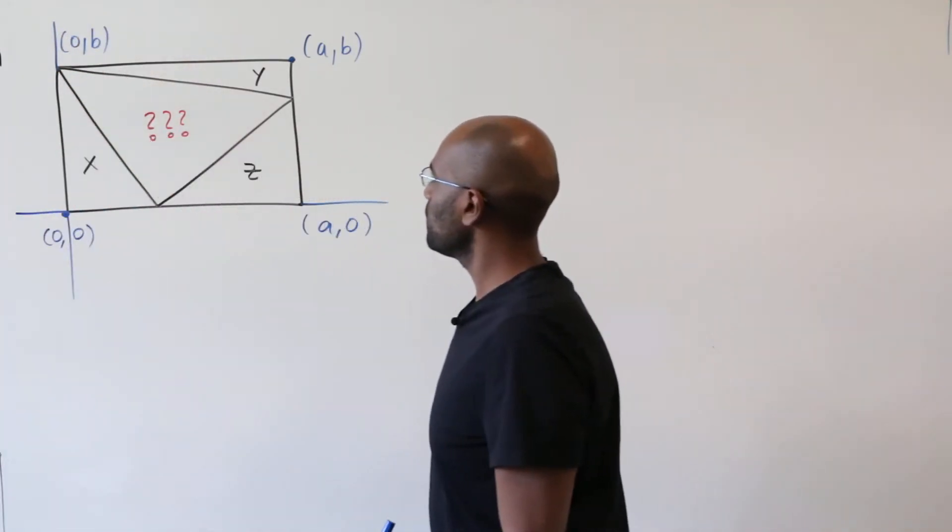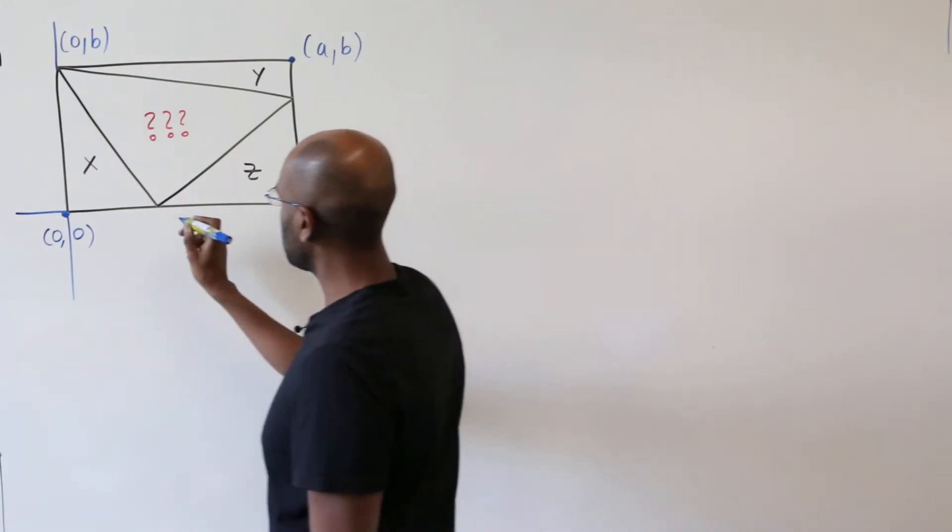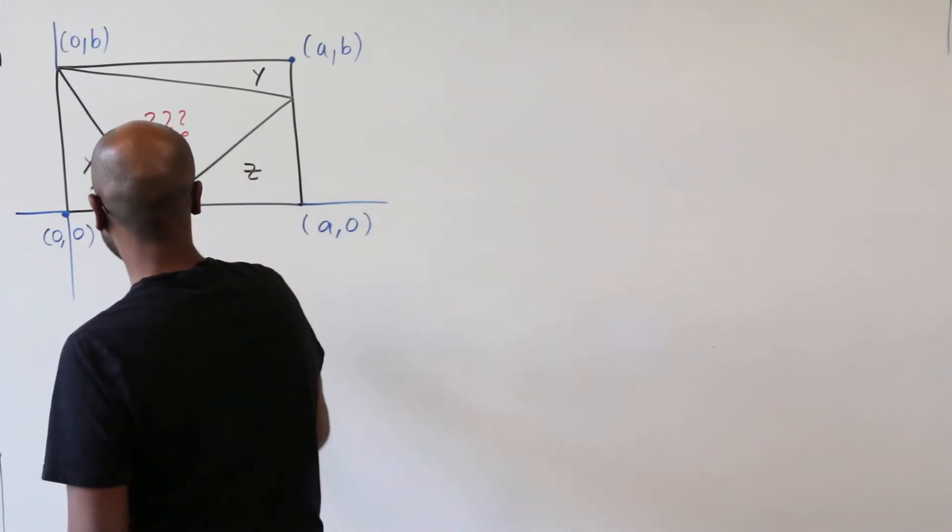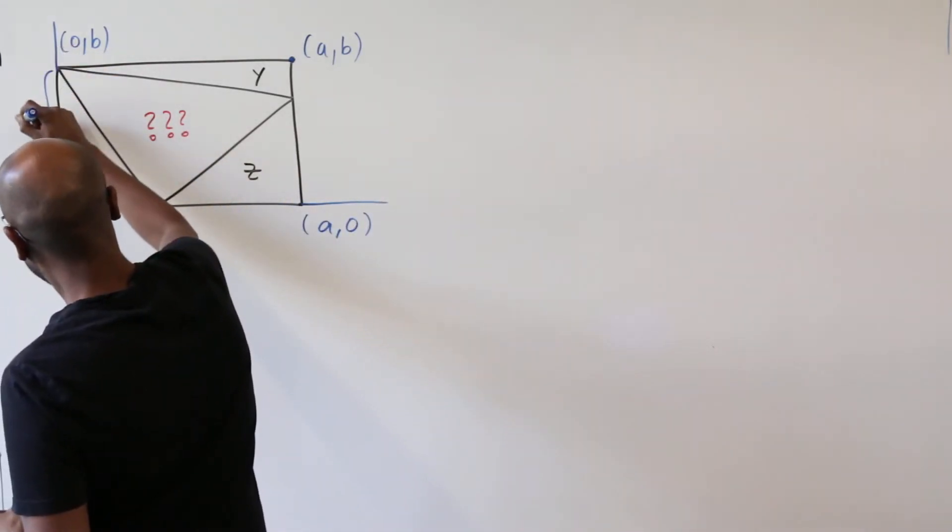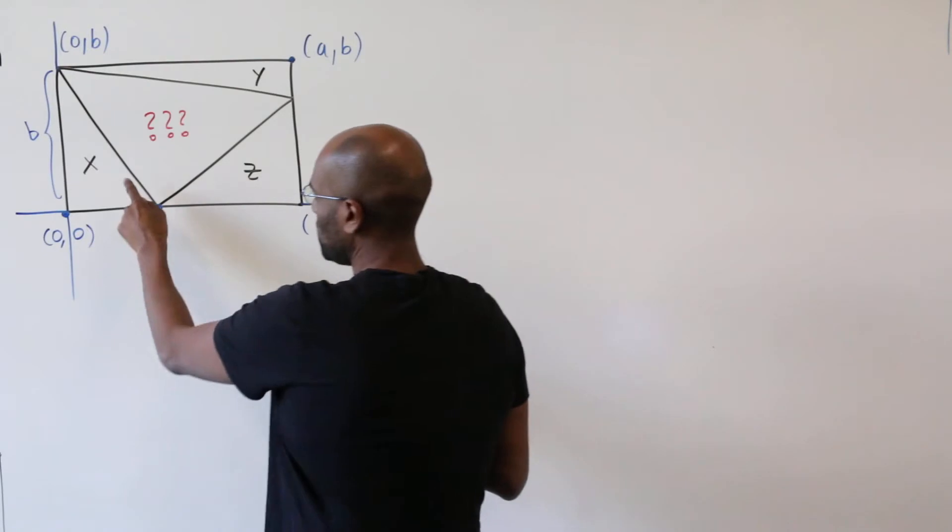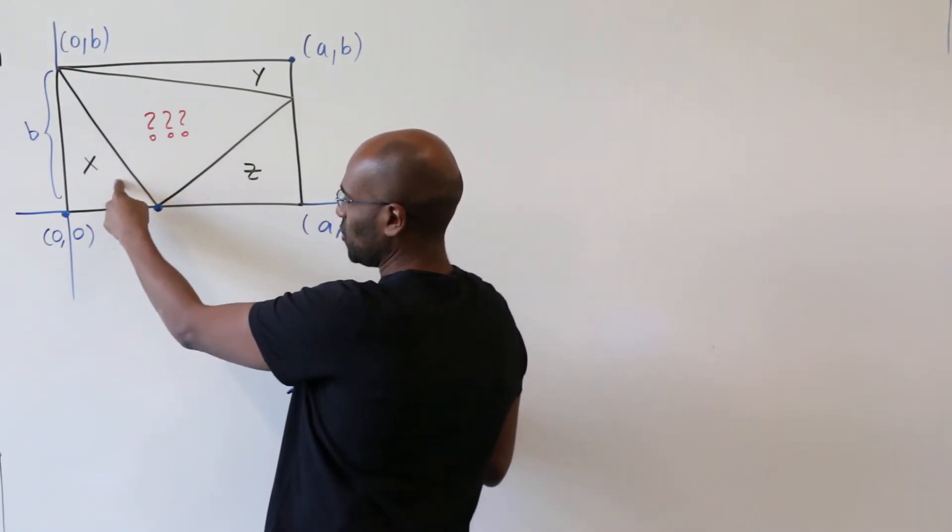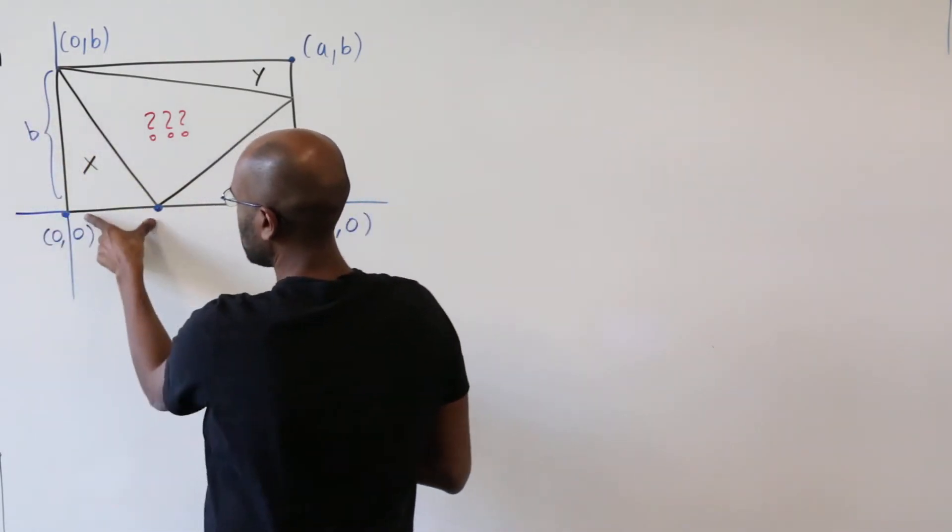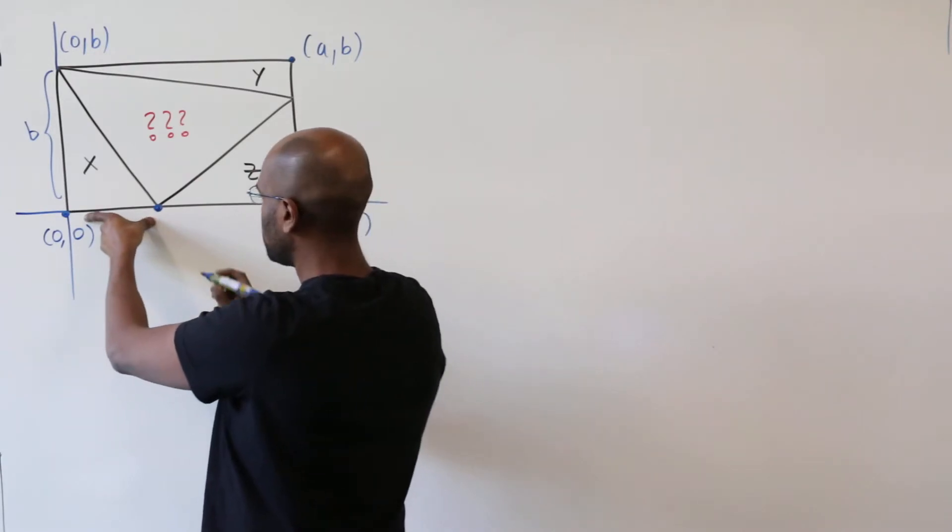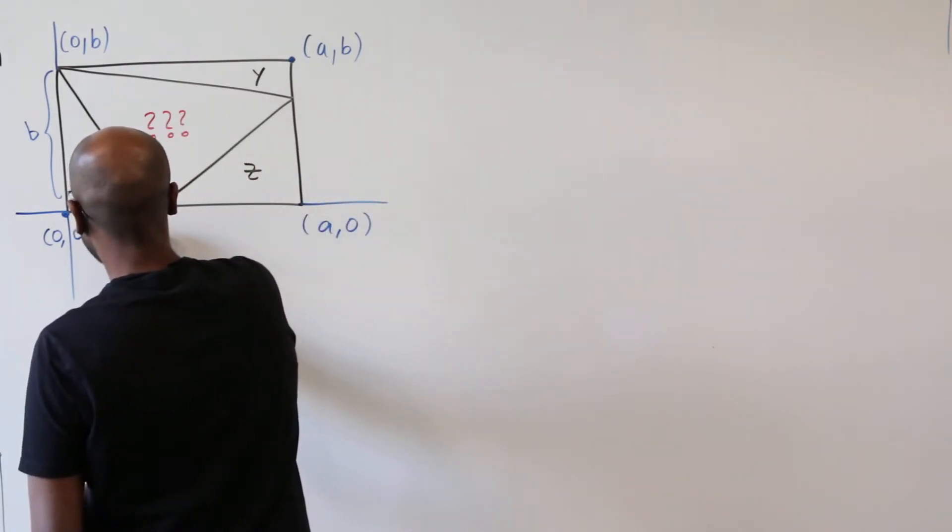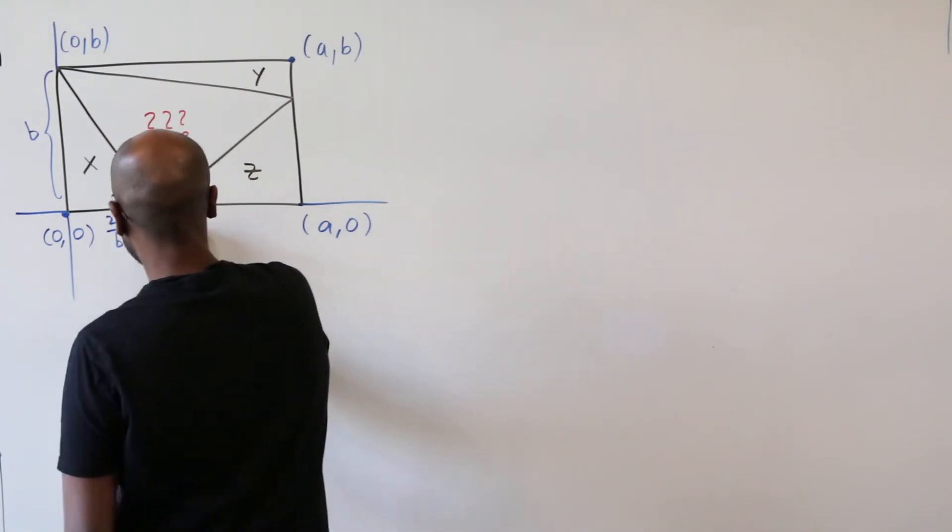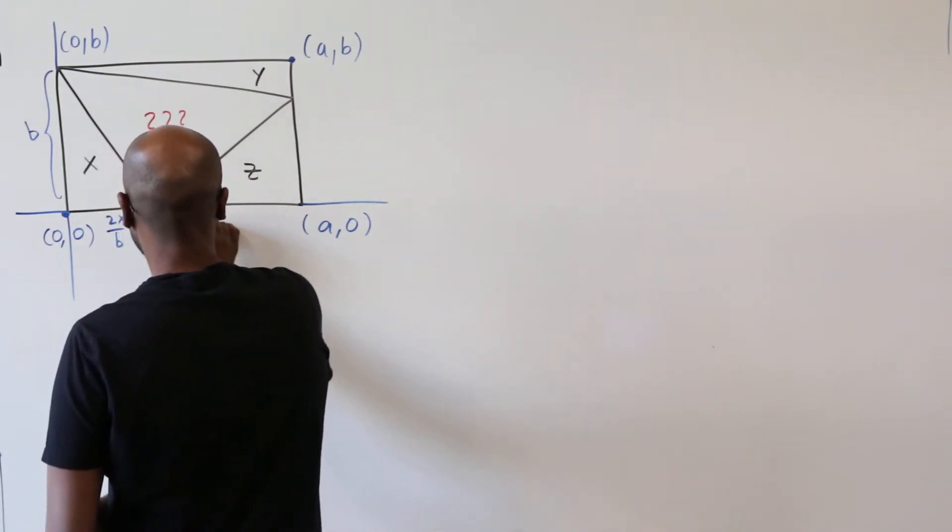Okay, now using areas we're going to be able to find out coordinates for the other vertices. So let's look at this one particular right here. This length here is b and this triangle has area x so the product of b and this thing has to be 2x. Consequently, this length is 2x over b and so the coordinate here is (2x/b, 0).